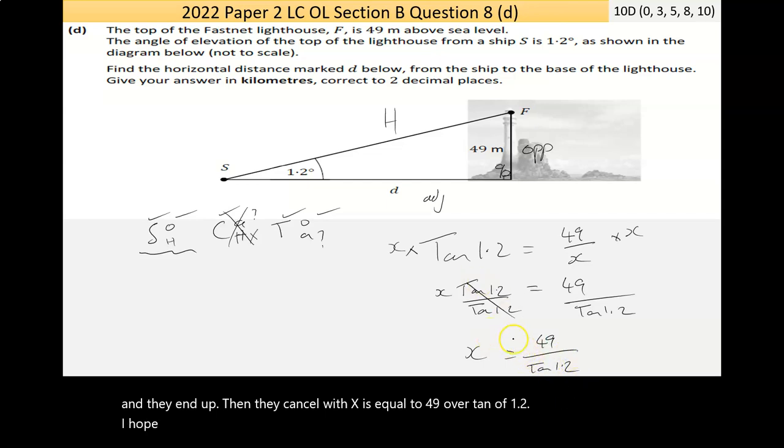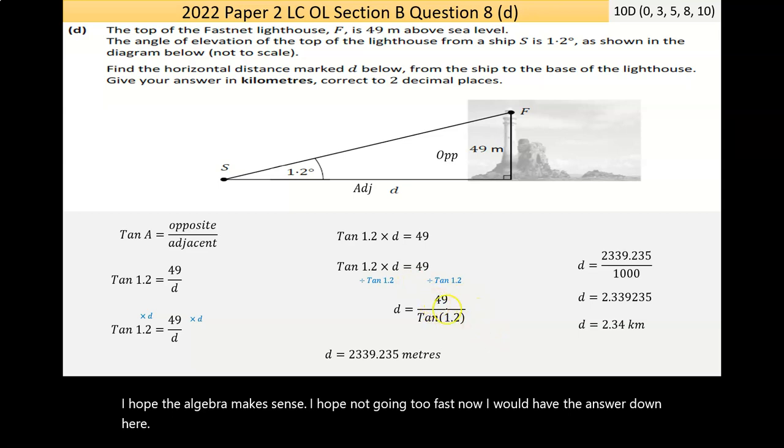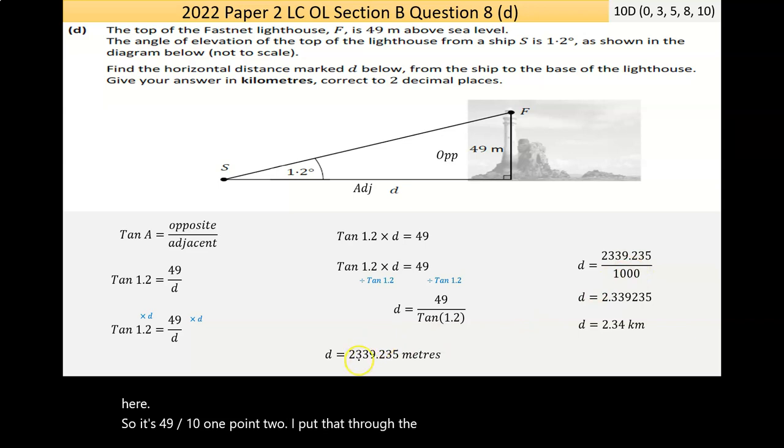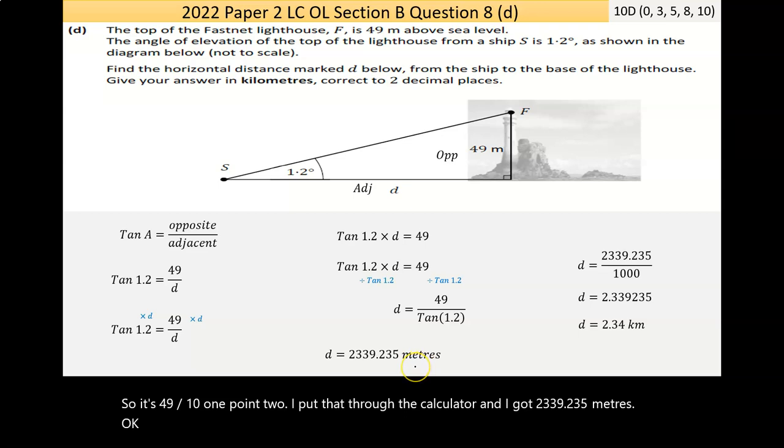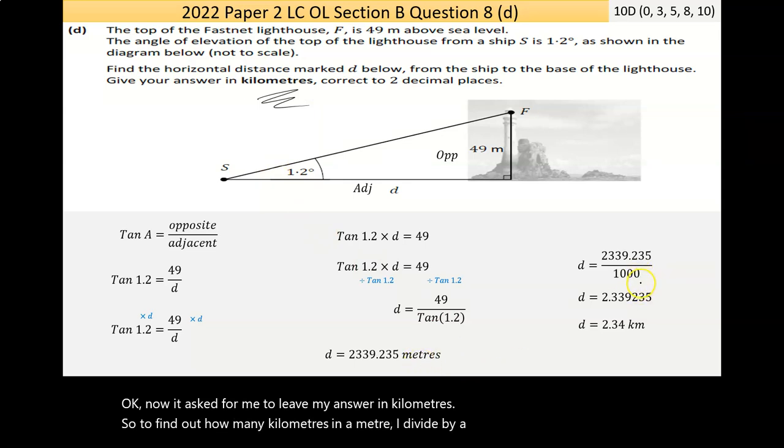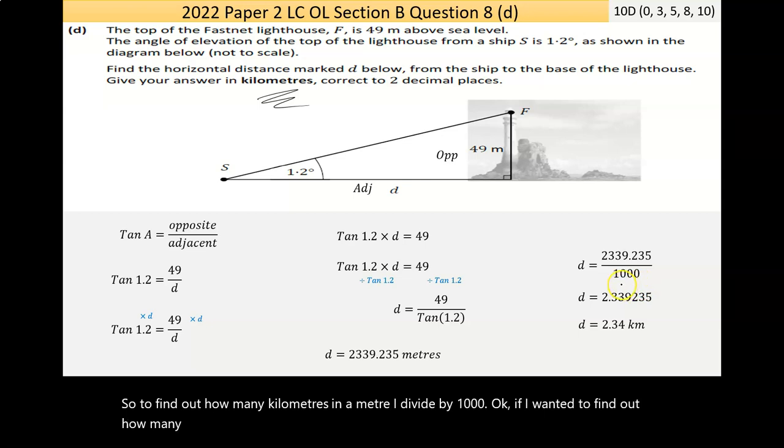Now, I would have the answer done out here. So, it's 49 divided by tan 1.2. I put that through the calculator, and I got 2339.235 meters. Now, it asks for me to leave my answer in kilometers. So, to find out how many kilometers in a meter, I divide by 1,000. If I wanted to find out how many millimeters in that number of meters, I'd multiply by 1,000. And that's the joy of the metric system. It's going up and down by 1,000. I can just move my decimal place the number of zeros. There's three zeros. So, I move it once, twice, three times.